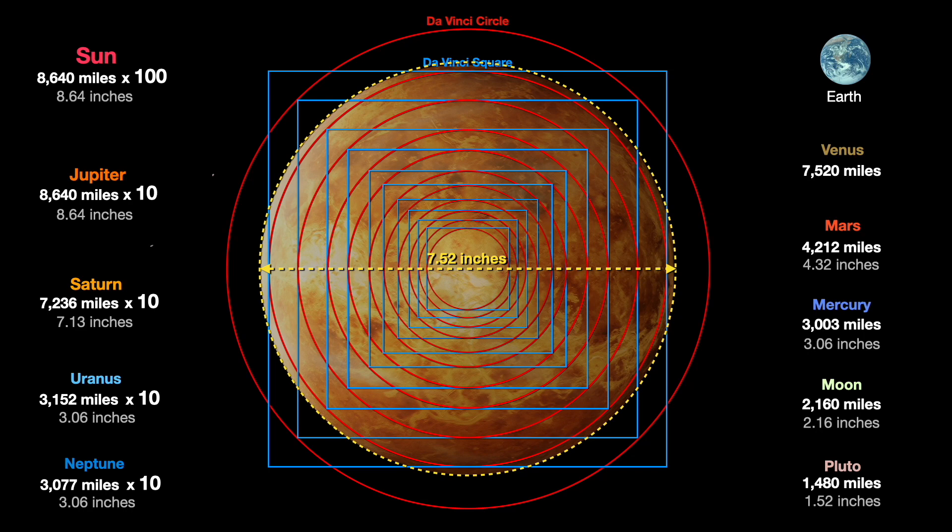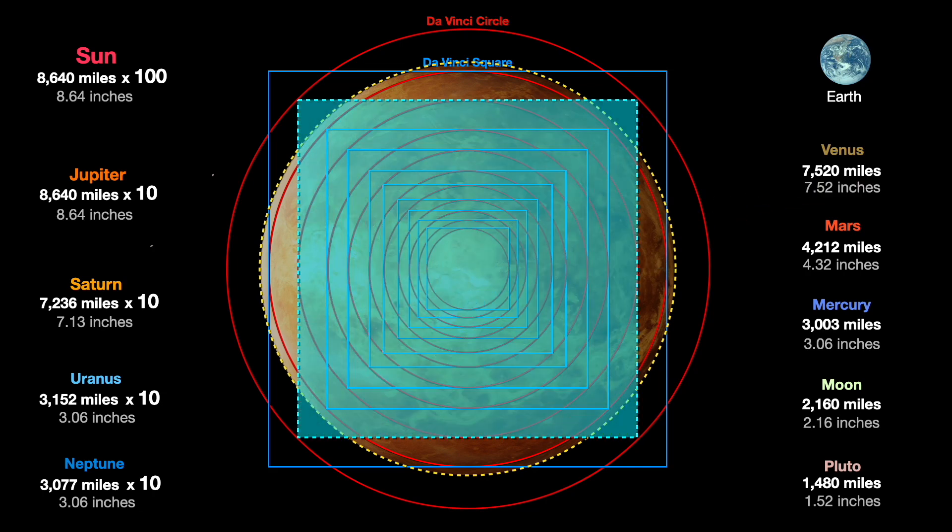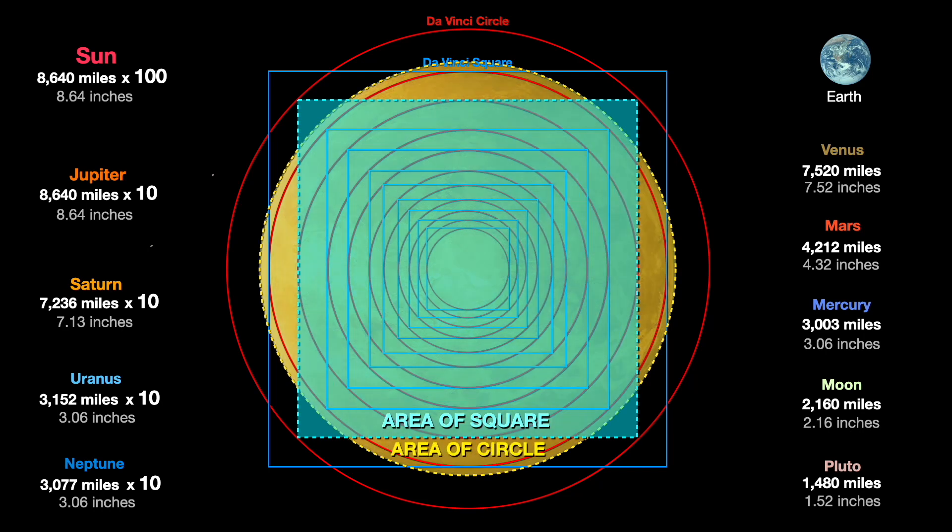But if we look at the inscribed square inside da Vinci's circle, which is 6.11 inches, something extraordinary becomes apparent. If we take the area of this square and divide it by the area of the Venus circle, we get a very extraordinary number: 0.841, which happens to be one of the most important trigonometric functions, sin(1) in radians. A ratio that basically defines radian measurement.